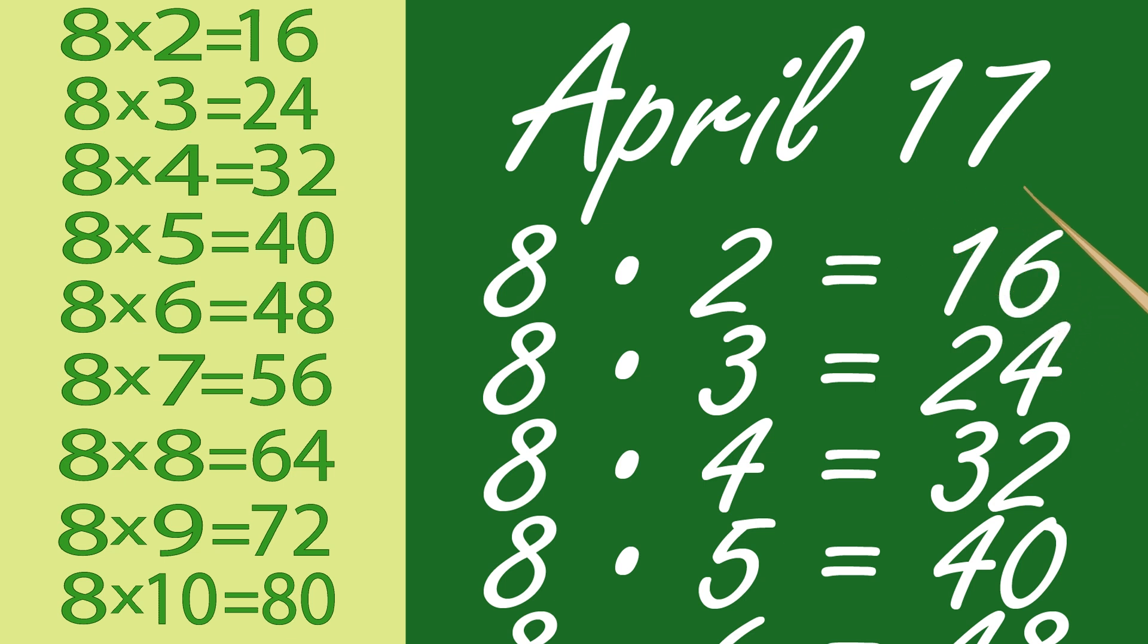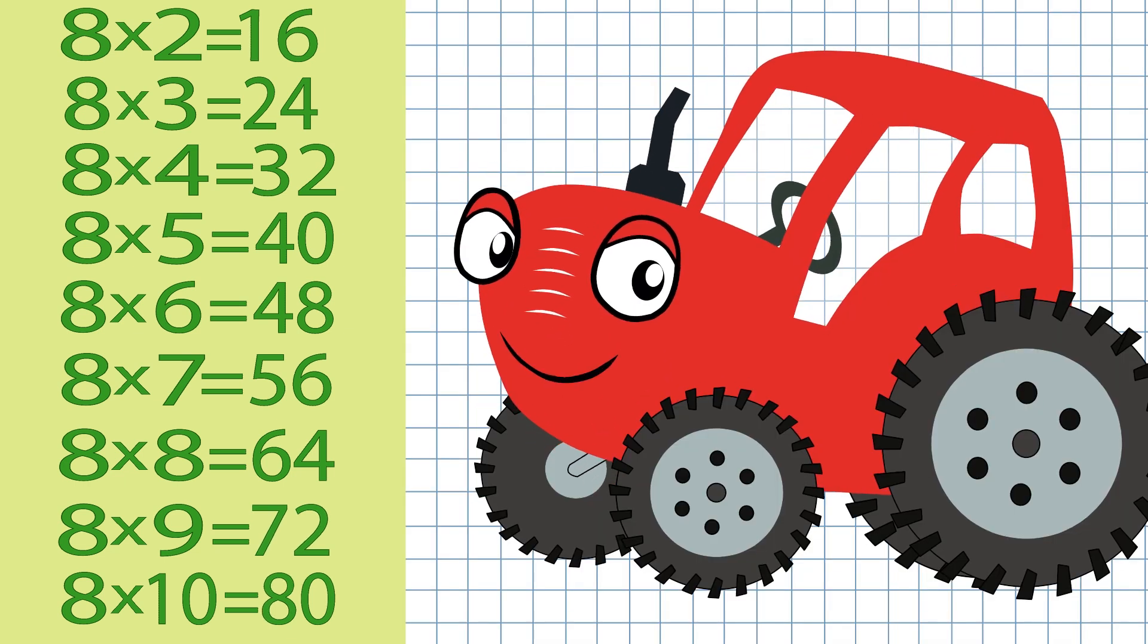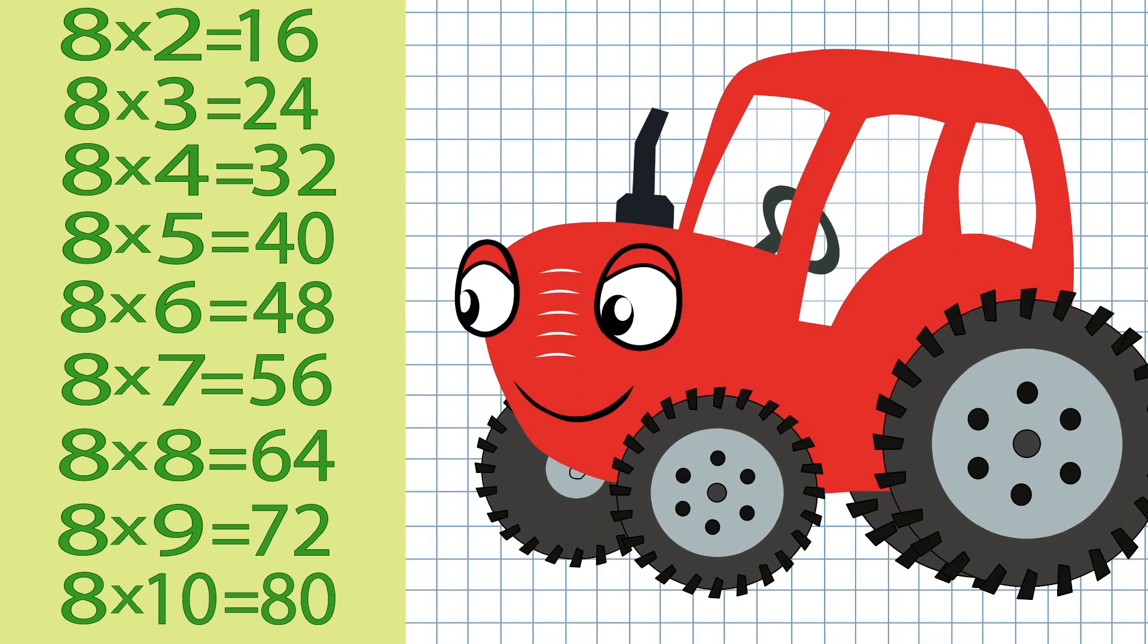Eight times ten is eighty. Teachers like this cognition. Those who eight times table know will escape addition.